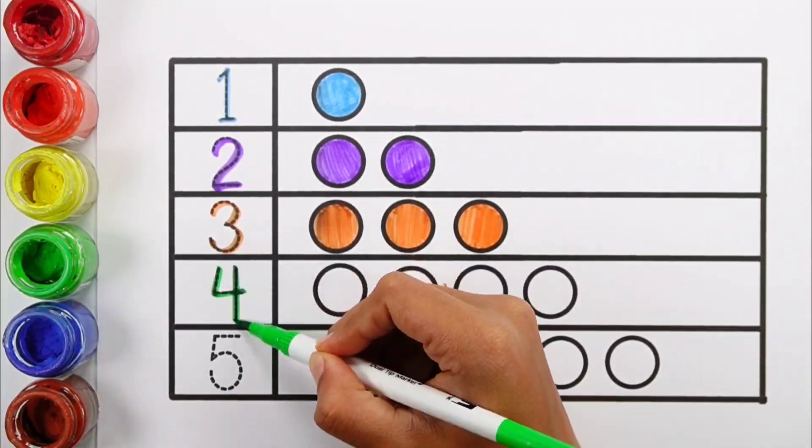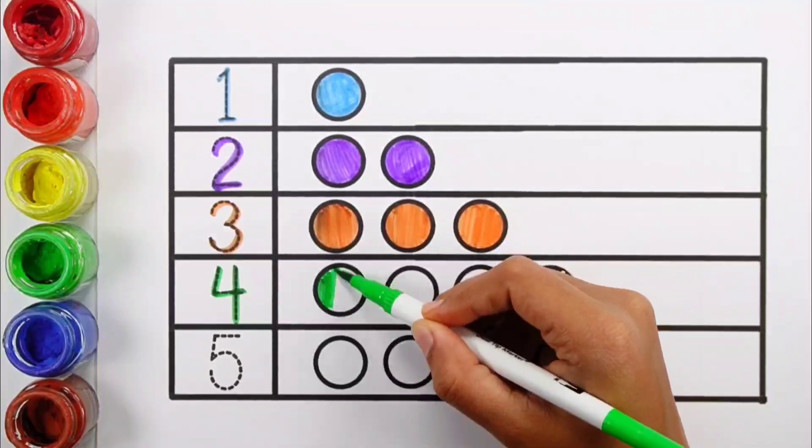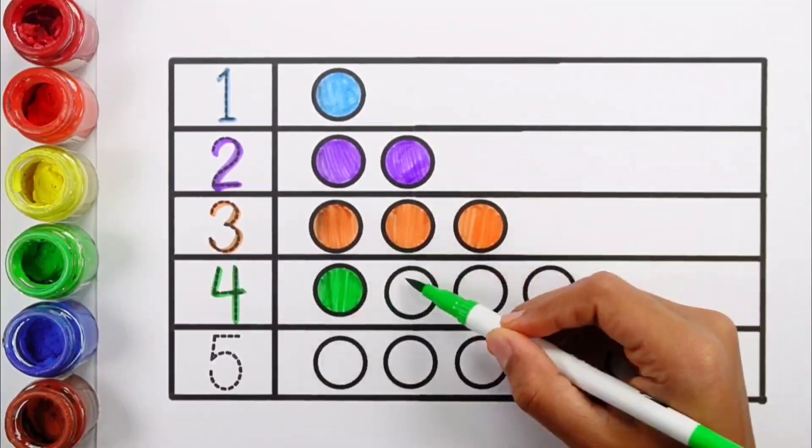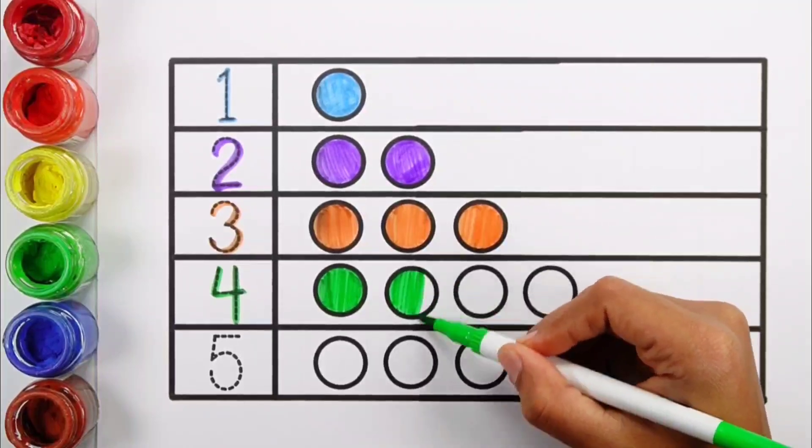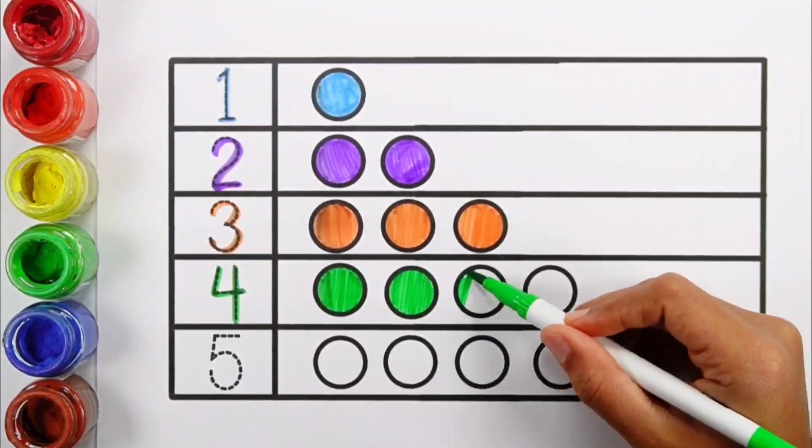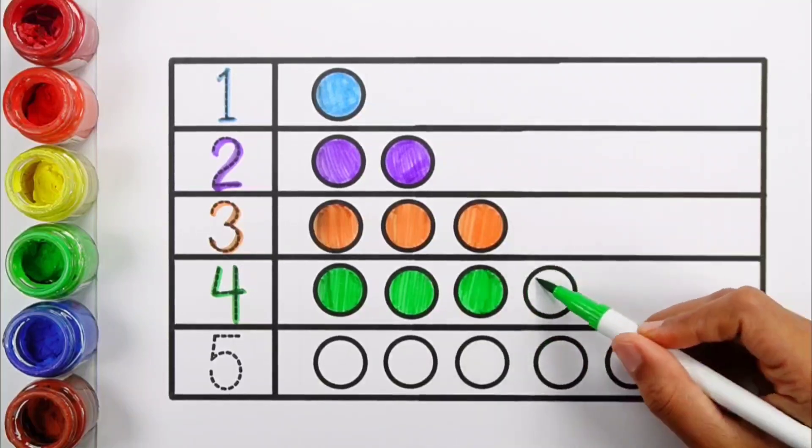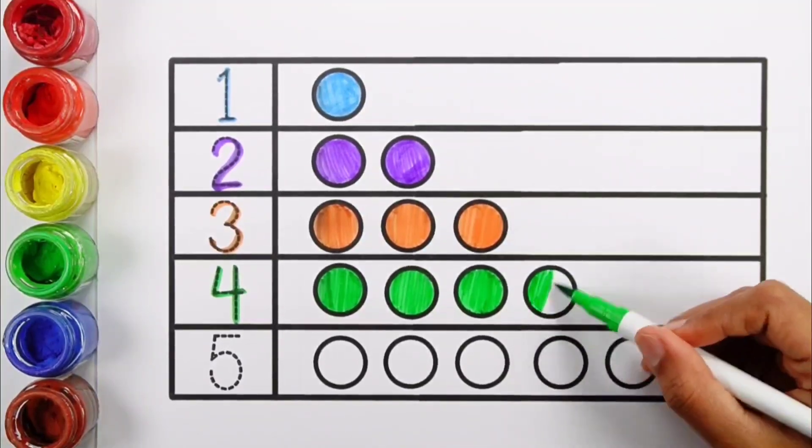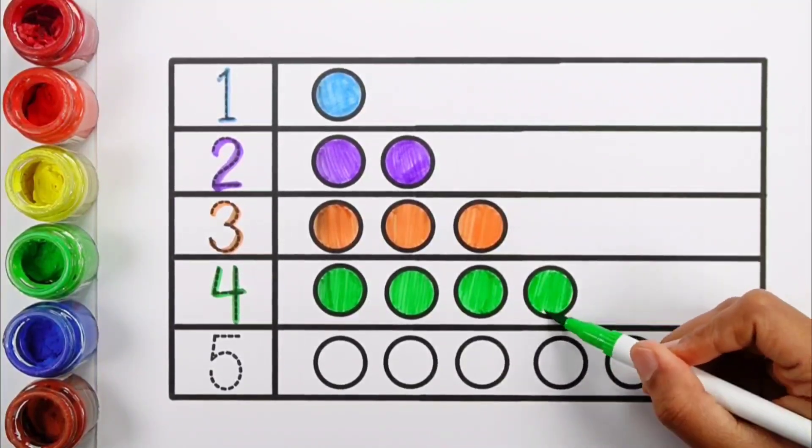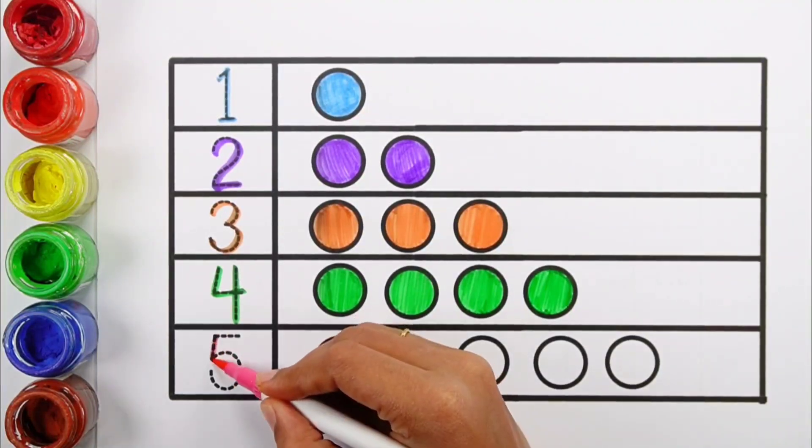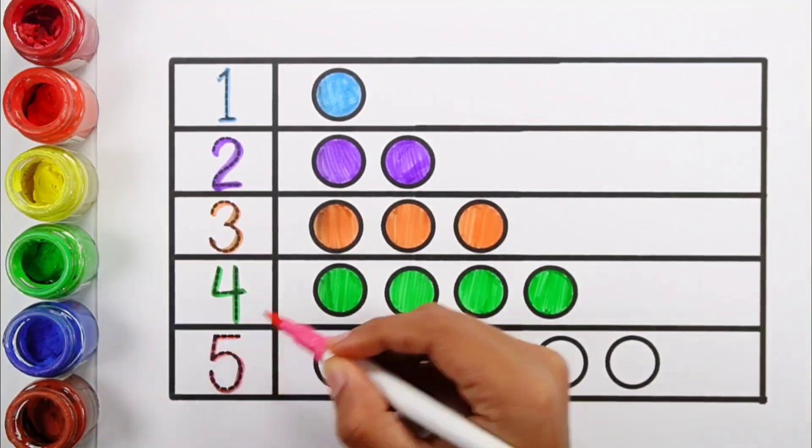Number four. One, two, three, four. Four balls, green color.